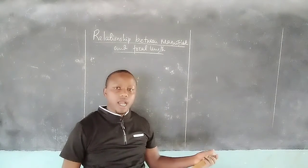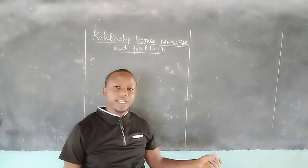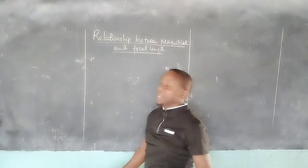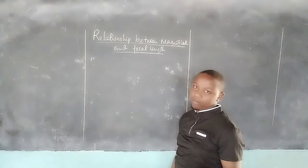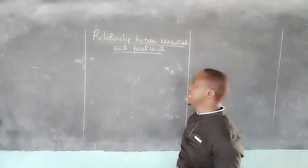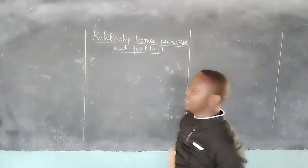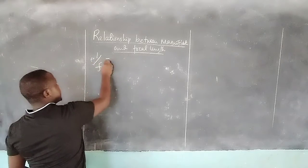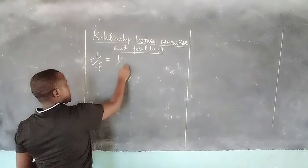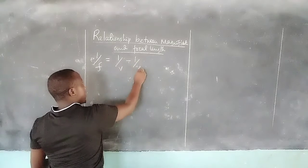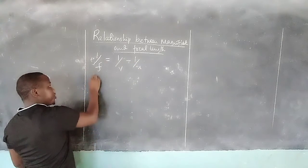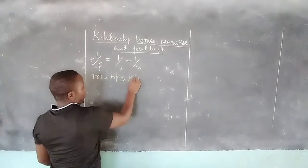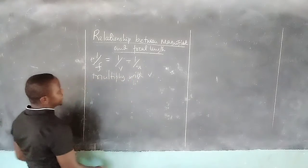Welcome once again. I would like to relate the focal length of a lens and its magnification. We can consider the lens formula: 1/F = 1/V + 1/U. In this equation we multiply with V on all sides.